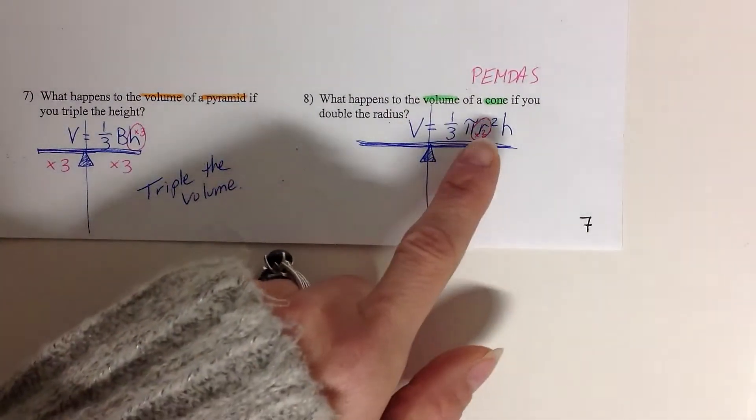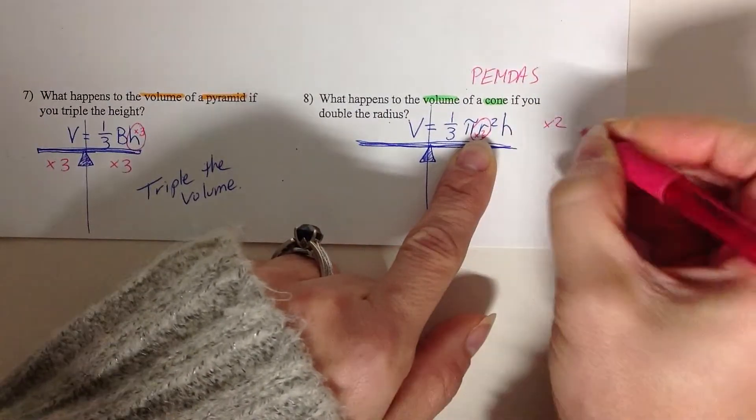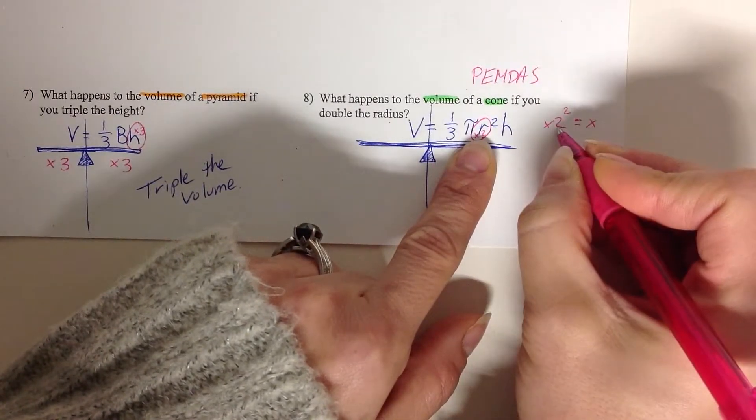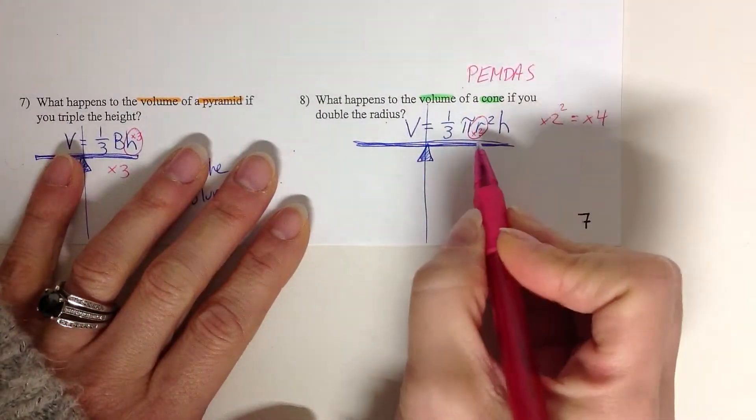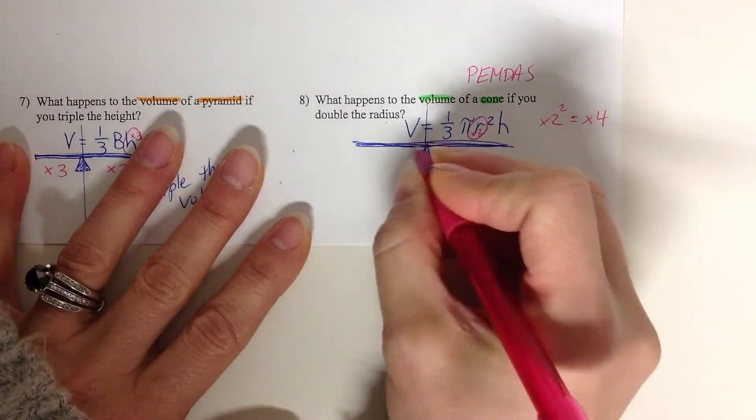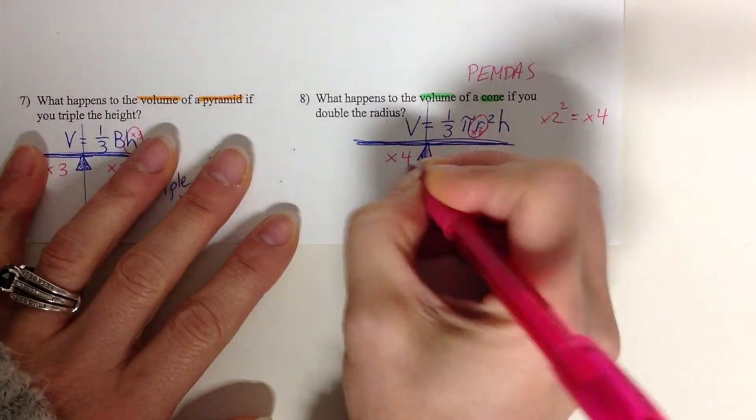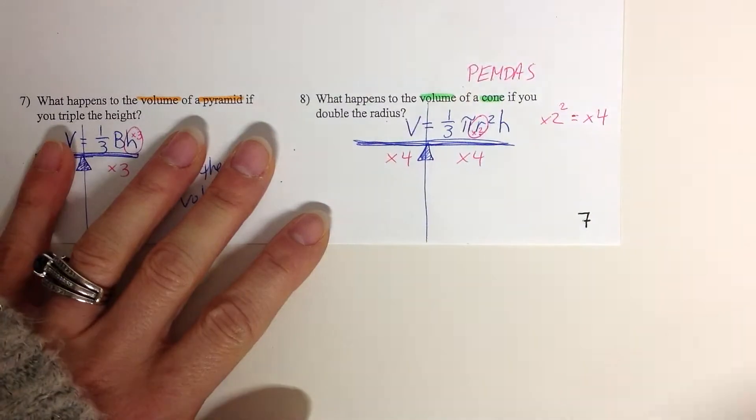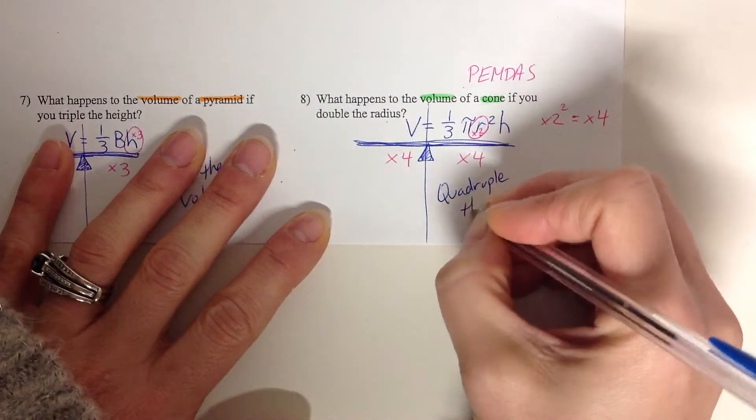So now I have to think about whatever I do to the radius, which was I doubled it, I now need to take that exponent, and that's the relationship that's actually going to happen. So it's actually going to end up multiplying by two squared is four. So what actually happens to this side, because that radius now has been quadrupled times four, is that side will be times four. So what happens to the right? It happens to the left. So what happens to the volume? If I double the radius, it will quadruple the volume.